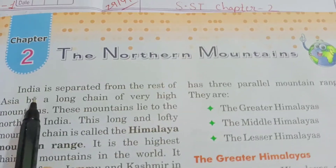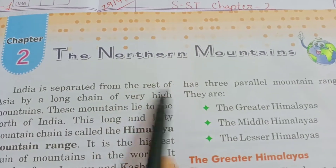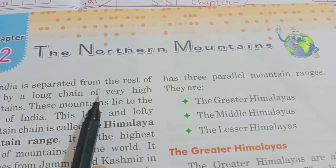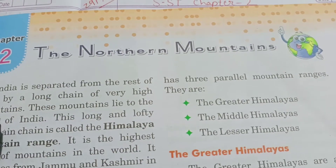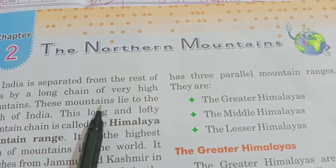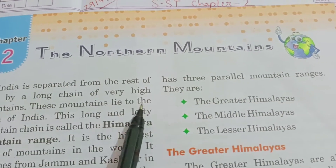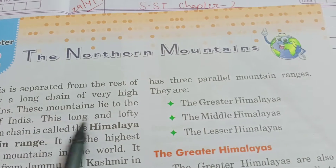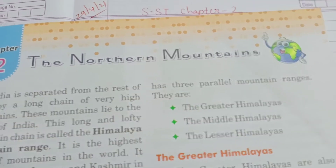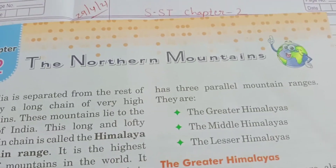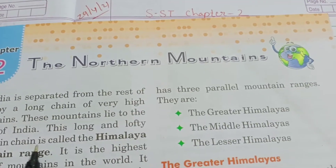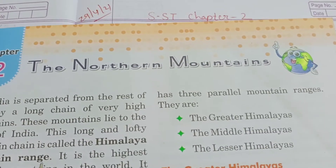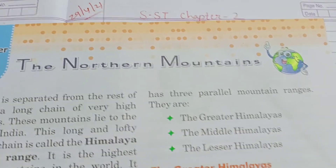India is separated from the rest of Asia by a long chain of very high mountains. These mountains lie to the north of India, and this long and lofty mountain chain is called the Himalaya mountain range.